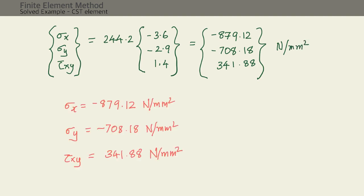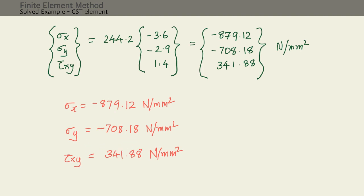Therefore, the solution to the problem is: sigma x = −879.12 MPa, sigma y = −708.18 MPa, and tau xy = 341.88 MPa.